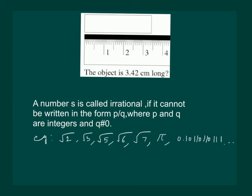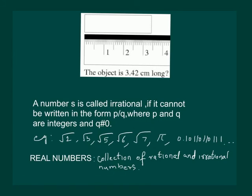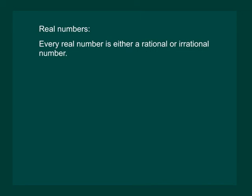There will be no other numbers left on the number line, and we call such a collection real numbers, which is basically the collection of rational and irrational numbers. They are denoted by a capital R.